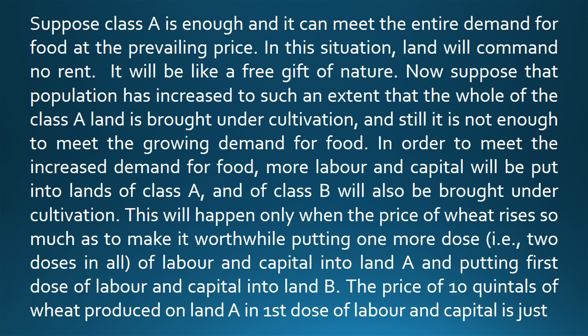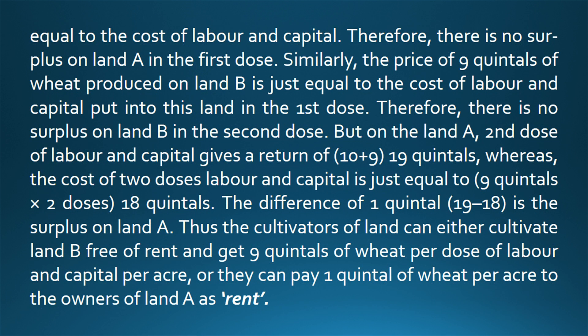Now suppose that population has increased to such an extent that the whole of the class A land is brought under cultivation, and still it is not enough to meet the growing demand for food. In order to meet the increased demand, more labour and capital will be put into lands of class A, and class B will also be brought under cultivation. This will happen only when the price of wheat rises so much as to make it worthwhile putting a second dose of labour and capital into land A and putting the first dose of labour and capital into land B. The price of ten quintals of wheat produced on land A in the first dose is just equal to the cost of labour and capital. Therefore, there is no surplus on land A in the first dose. Similarly, the price of nine quintals of wheat produced on land B is just equal to the cost of labour and capital put into this land in the first dose. Therefore, there is no surplus on land B.